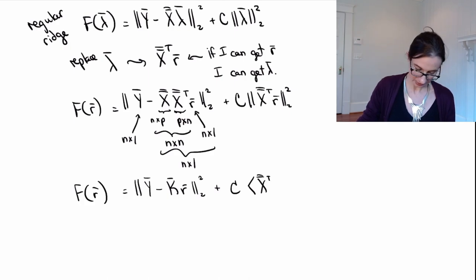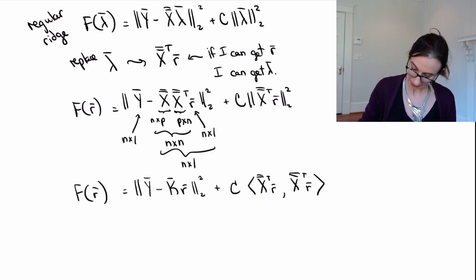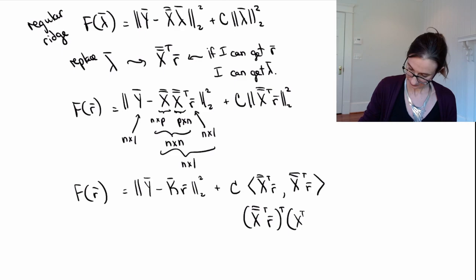This is just the inner product, standard inner product of two vectors, okay? So there's nothing fancy here at this point. And so that standard inner product means you take the first one and transpose it and you multiply it by the second one. So let's just do that really quickly.